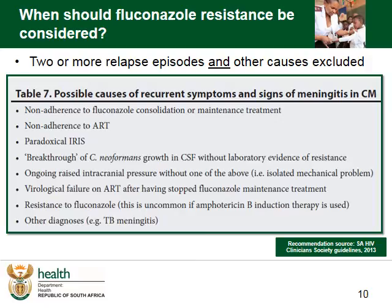As mentioned earlier, fluconazole resistance is relatively rare and only one of many causes of recurrence of symptoms in cryptococcal meningitis. When a patient relapses, be sure to consider non-adherence first, then paradoxical IRIS, or you may even see a breakthrough of Cryptococcus neoformans even when there is no resistance present. There could also be a blockage of the drainage of the CSF — for example with a cryptococcal coma causing ongoing symptoms — or just check if the clinic hasn't perhaps stopped the fluconazole maintenance. Also remember that patients with ARV failure are again at high risk of reactivation.